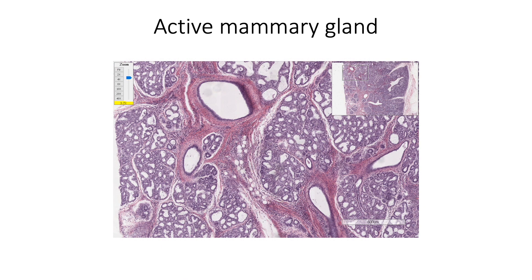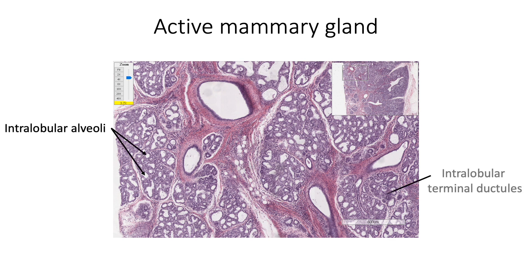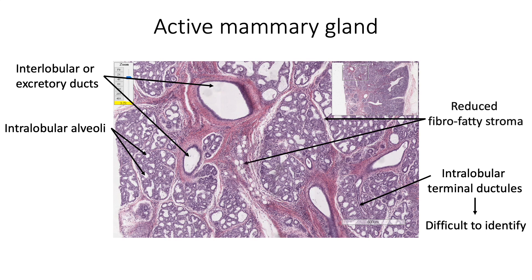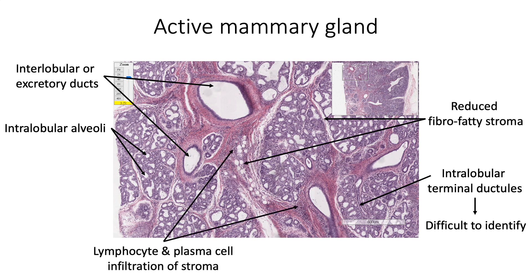In the active mammary gland, the terminal duct lobular unit predominantly contains intralobular alveoli. We can also see intralobular terminal ductules, but they are difficult to distinguish from the alveoli because their lining epithelium almost resembles that of alveoli. In addition, we also see interlobular or excretory ducts in the reduced fibro-fatty stroma, which shows infiltration by lymphocytes and plasma cells.